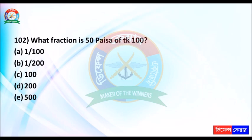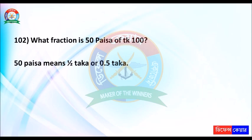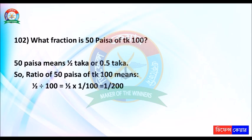What fraction is 50 paisa of taka 100? 50 paisa means half taka, or 0.5 taka. So the ratio of 50 paisa to taka 100 means half divided by 100, which equals half multiplied by 1 by 100, equal to 1 by 200.